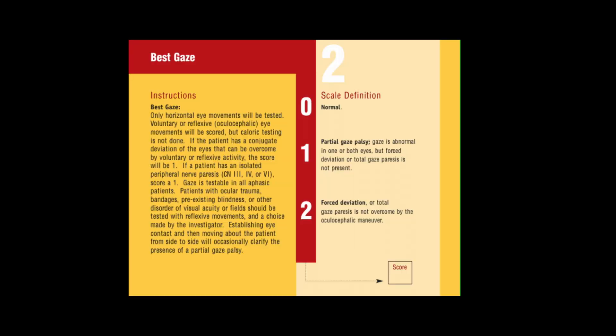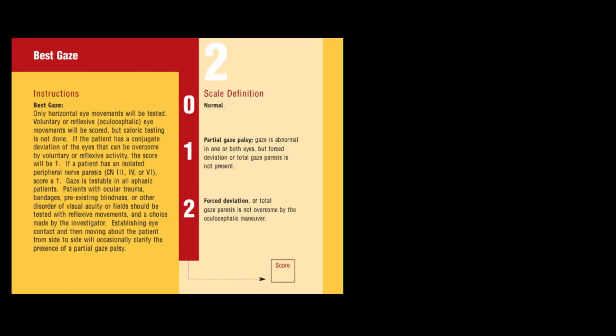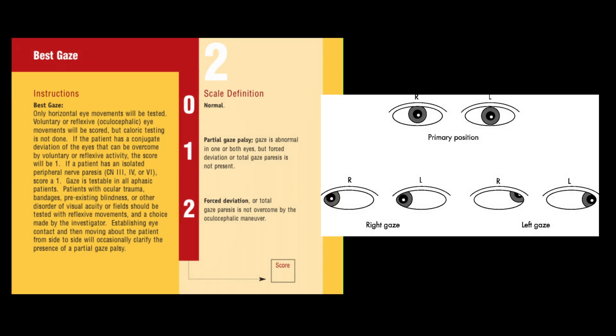If they can perform this task without any difficulties, they'll be given a score of zero. On the other end of the spectrum, a score of two would be given to an individual who has forced gaze deviation, meaning they are only looking at one side of the world — either the left or the right — and they are not able to overcome this forced gaze deviation.